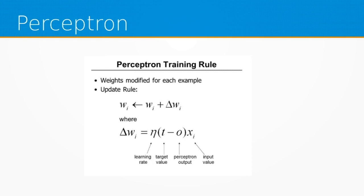First, we set a learning rate between 0 and 1, and initialize the weights between 0 and 1 randomly. This is how we update the weights each iteration: we take w and do w plus the gradient. The gradient is found using stochastic gradient descent. You have the learning rate n, and then the target value y minus whatever the perceptron currently outputs with its current weights, times x at i.